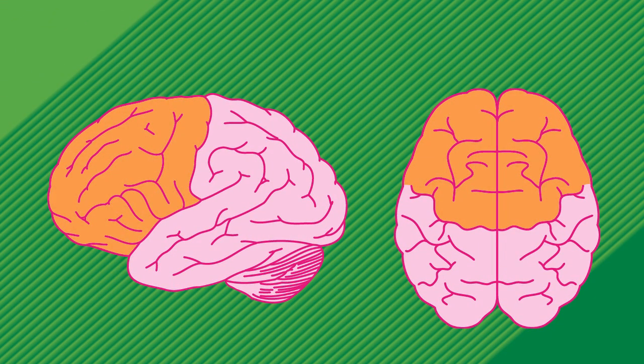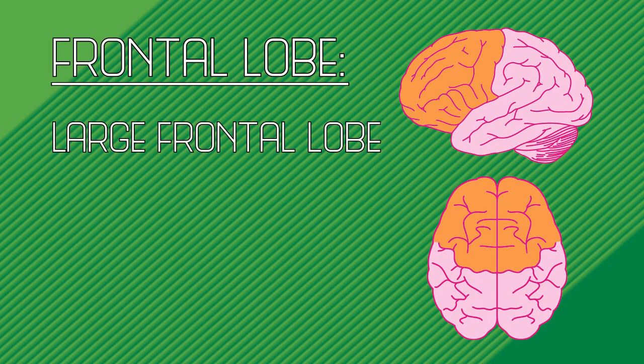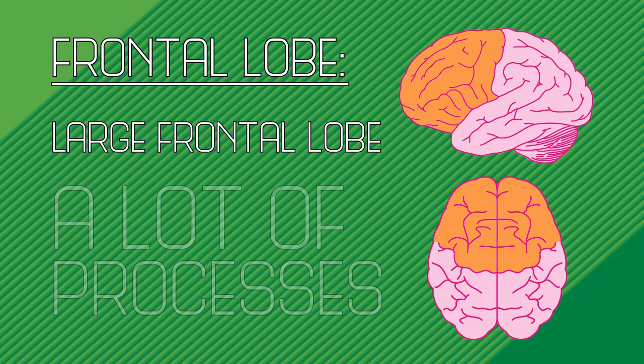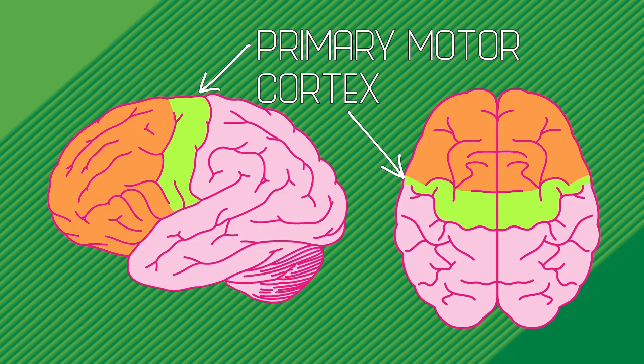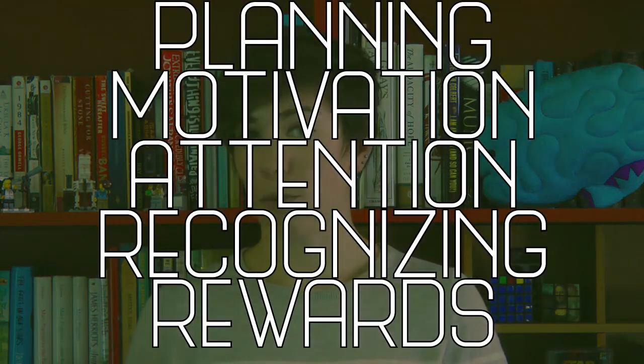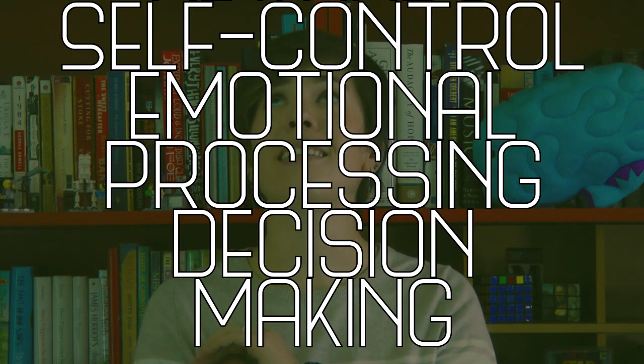At the front of the brain, we have the largest lobe of them all — the frontal lobe. This lobe is one of the major things that makes the human brain unique; we have an extremely large frontal lobe compared to other species. Right next to the parietal lobe, separated from the somatosensory cortex by just the narrow line of the central sulcus, we find the primary motor cortex — like a remote control for your body. The frontal lobe is also important for higher-level cognitive abilities including planning, motivation, attention, recognizing reward, self-control, emotional processing, decision-making, and more. Damaging the frontal lobe can have huge effects on personality.